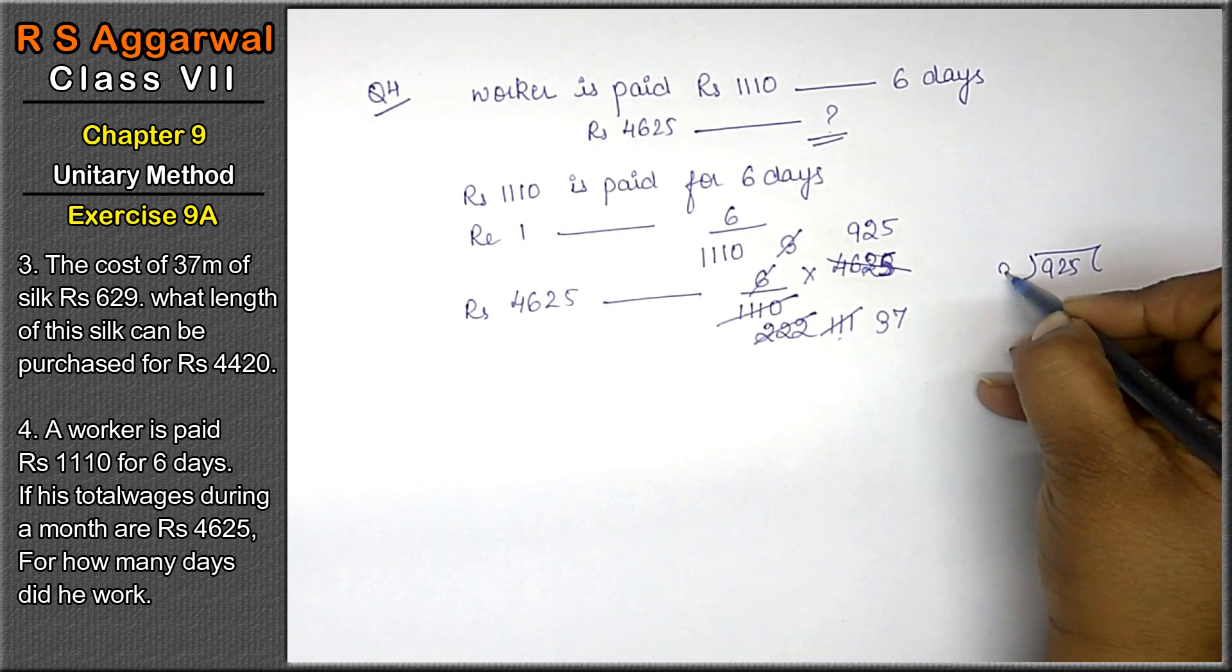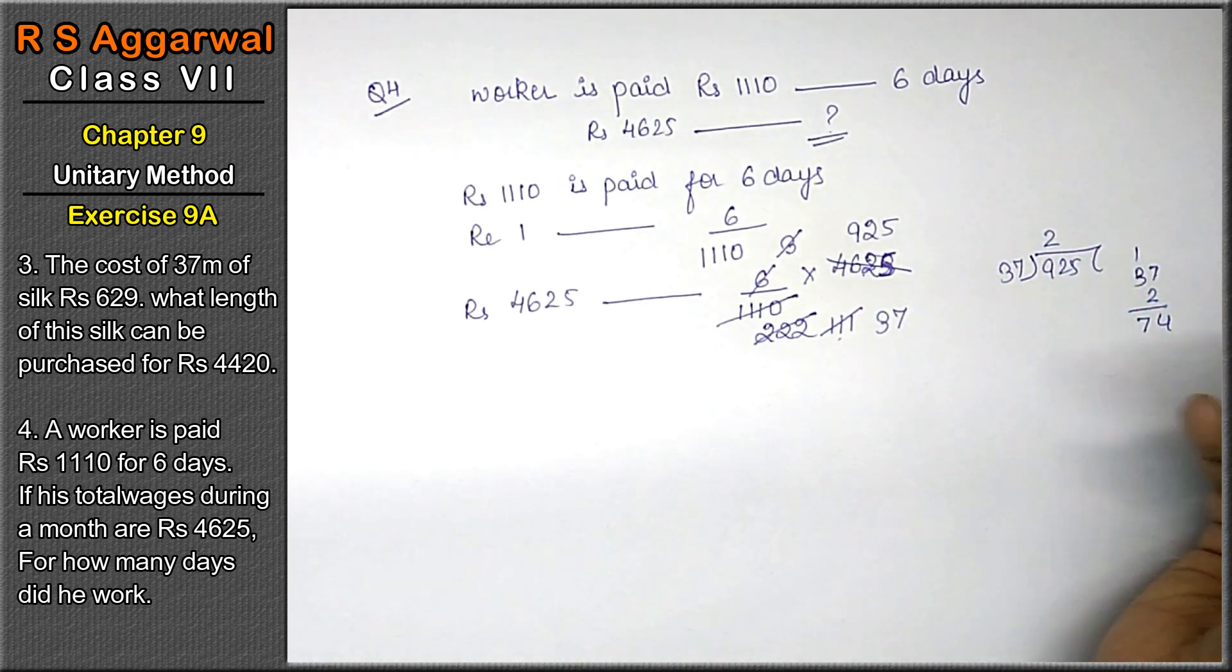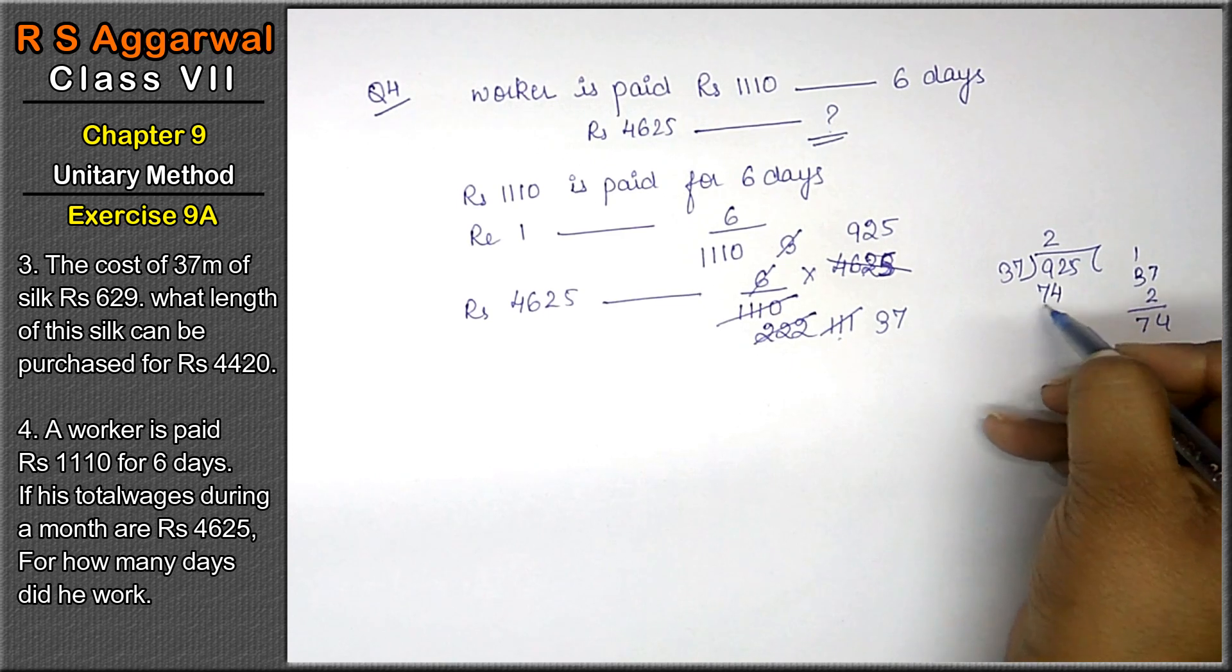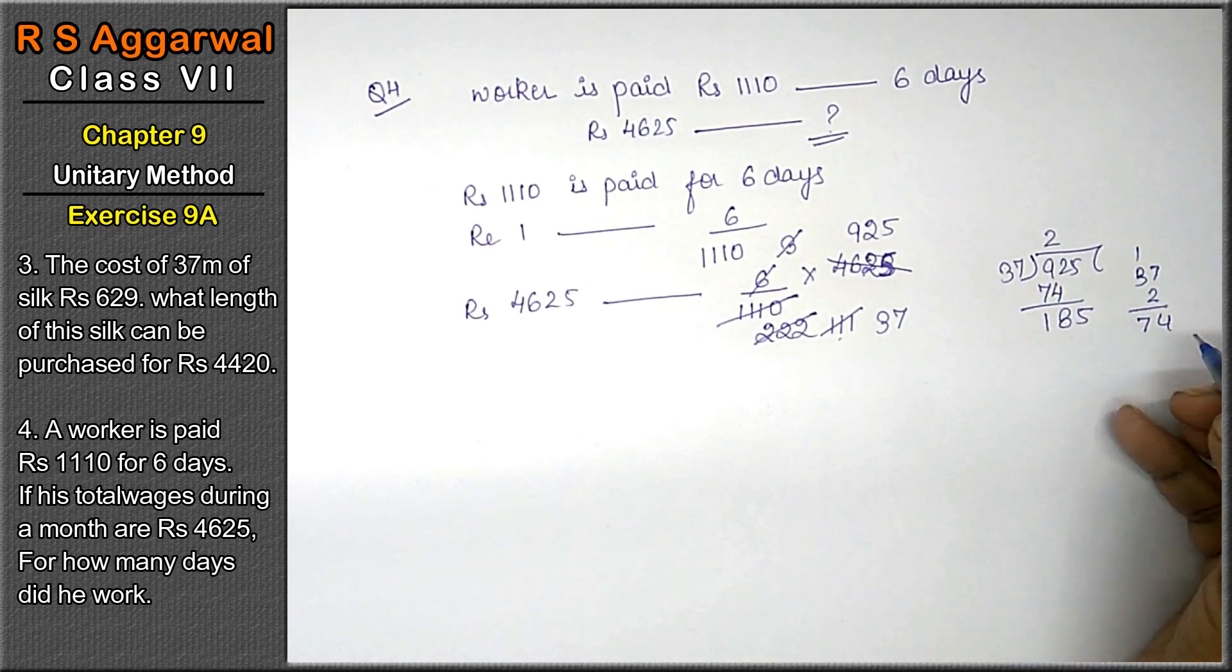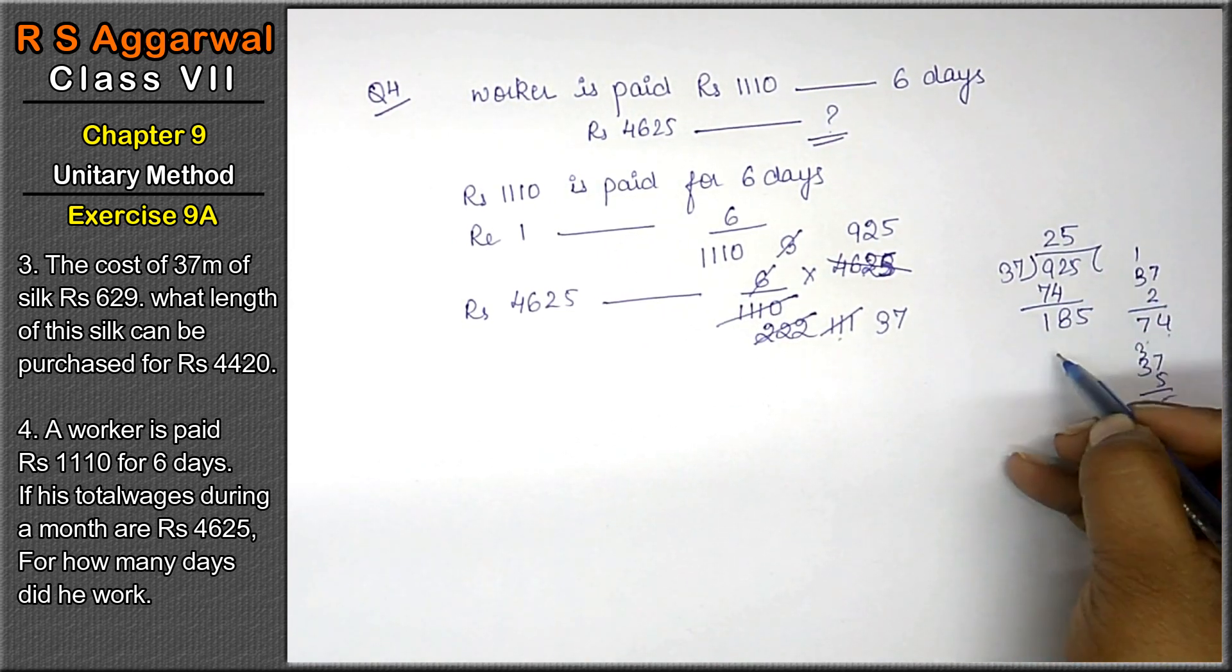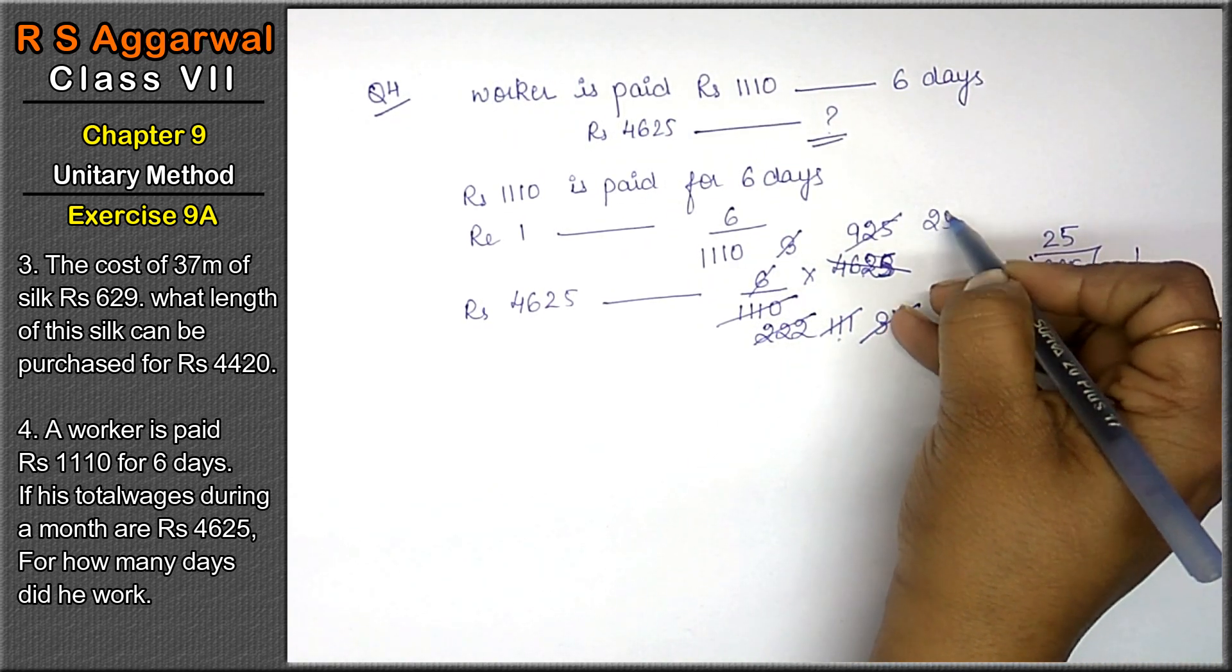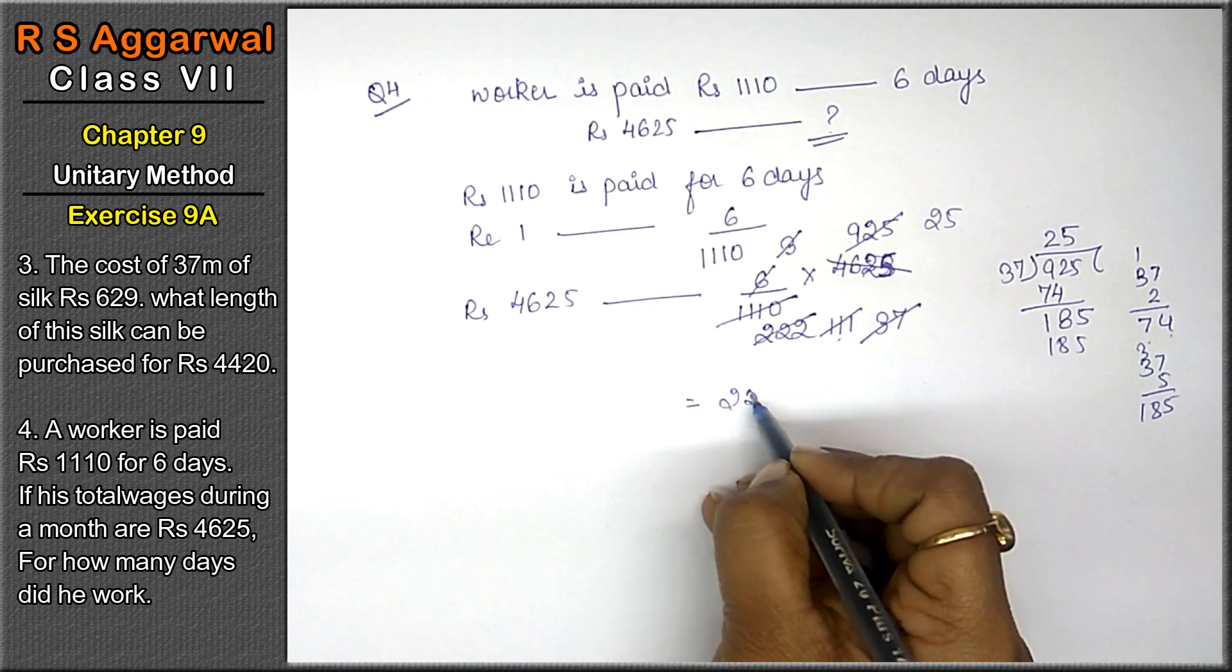Dividing 925 by 37. After working through the arithmetic, 37 into 25 is 925. The answer is 25 days.